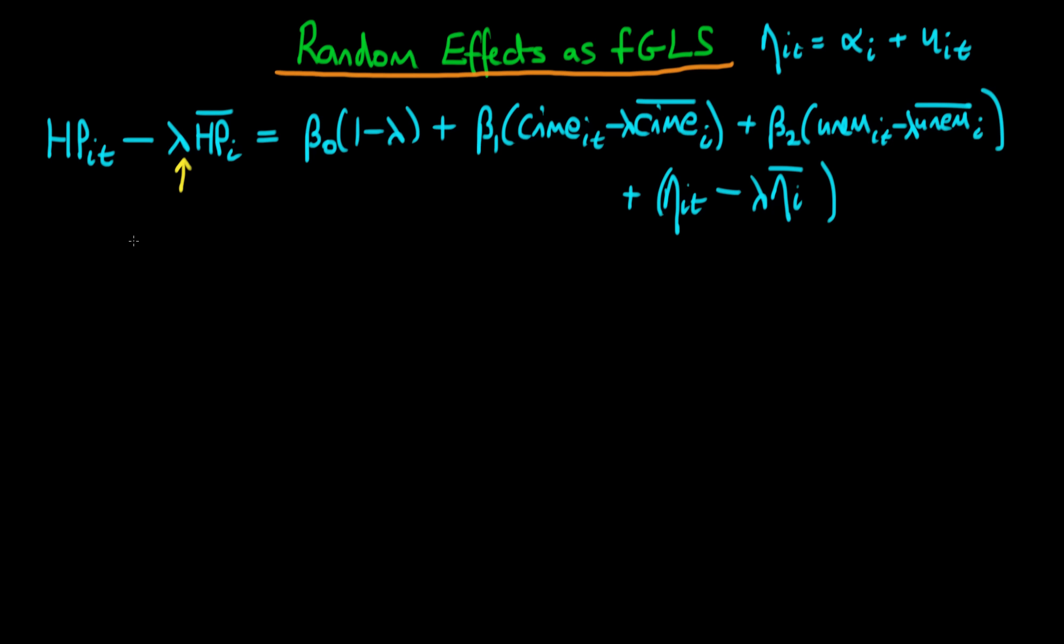We actually stated what the parameter lambda was. It was equal to 1 minus sigma mu squared divided by sigma mu squared plus t times sigma alpha squared, all to the power a half.